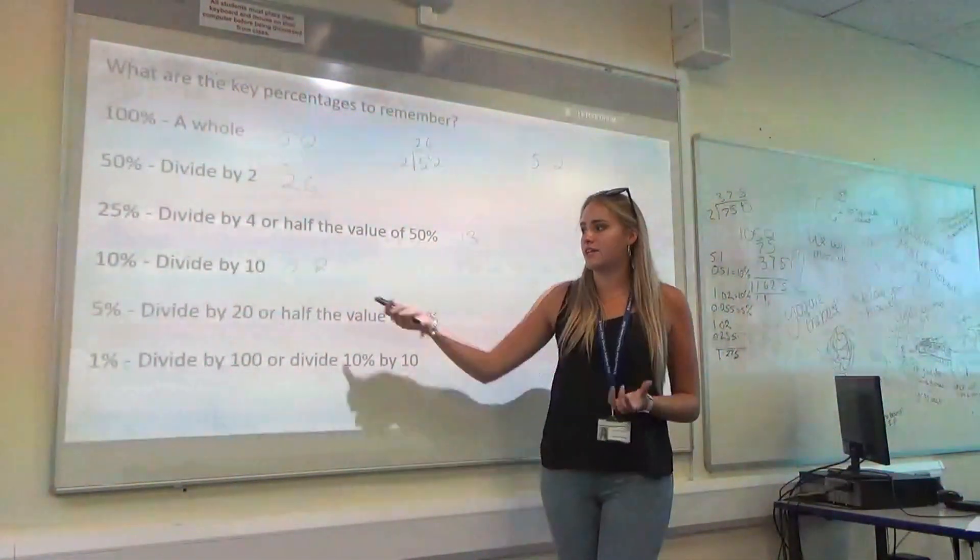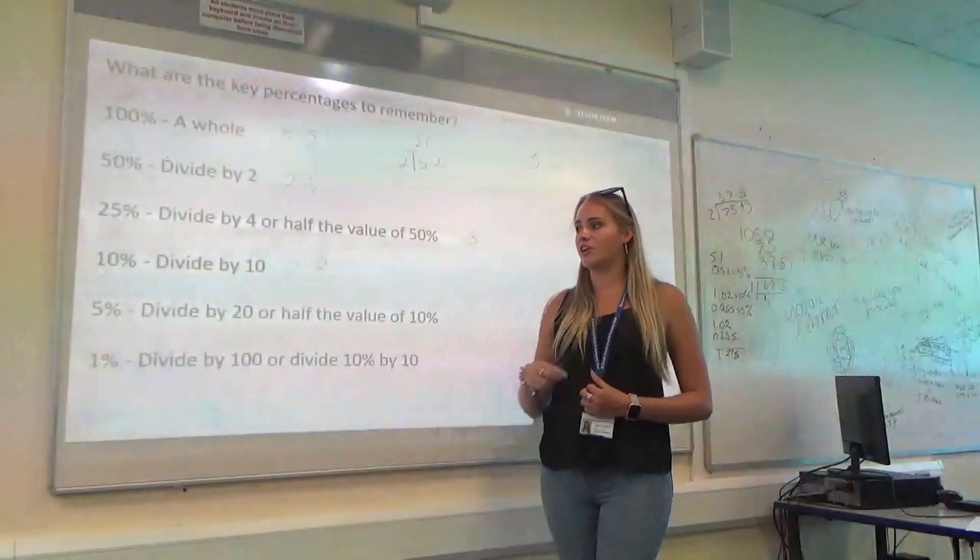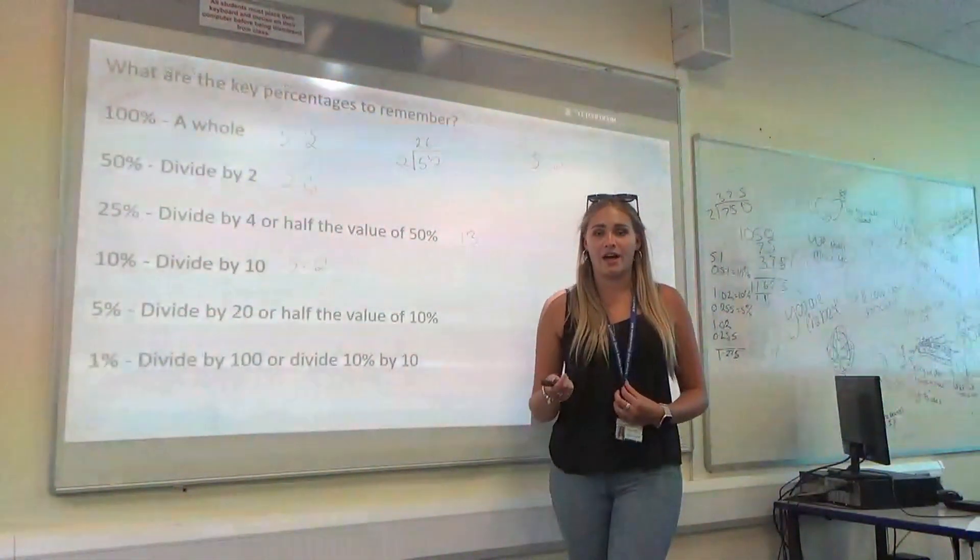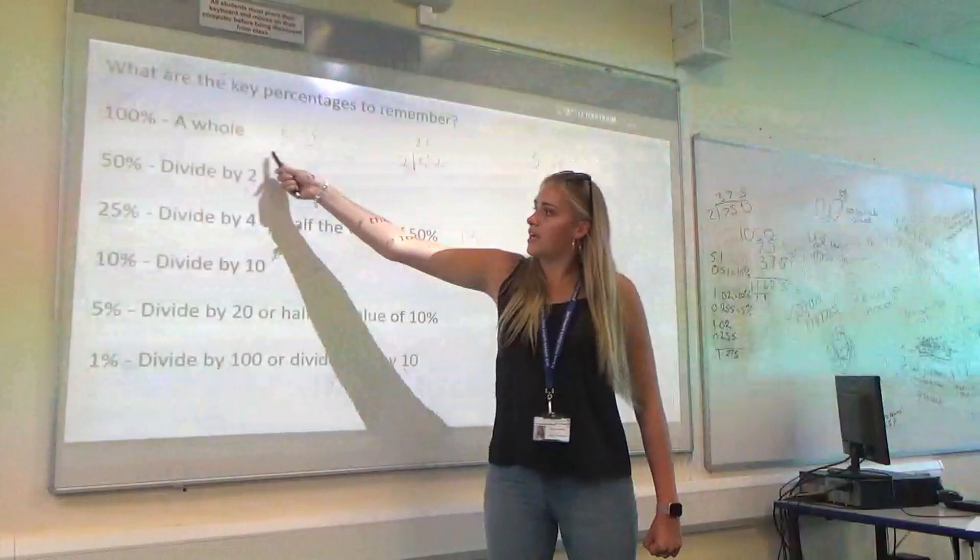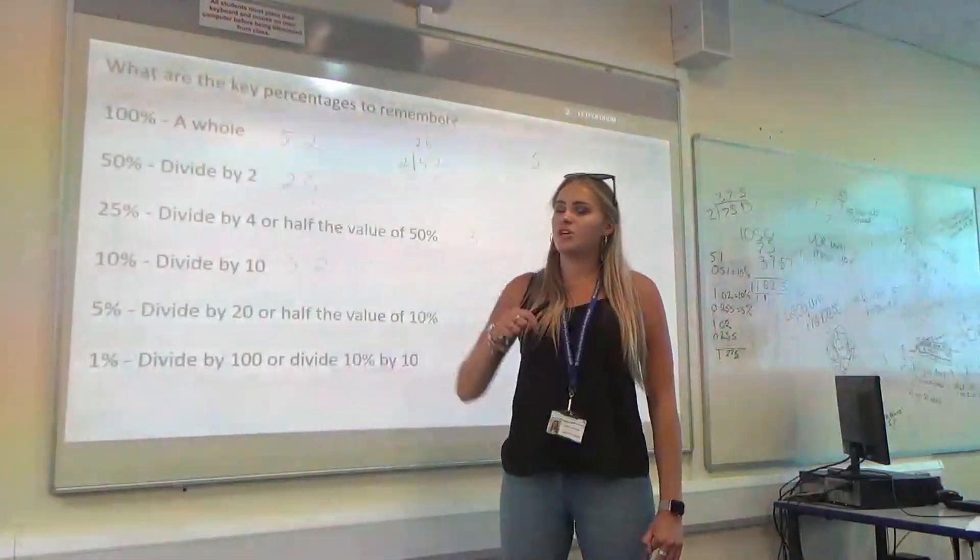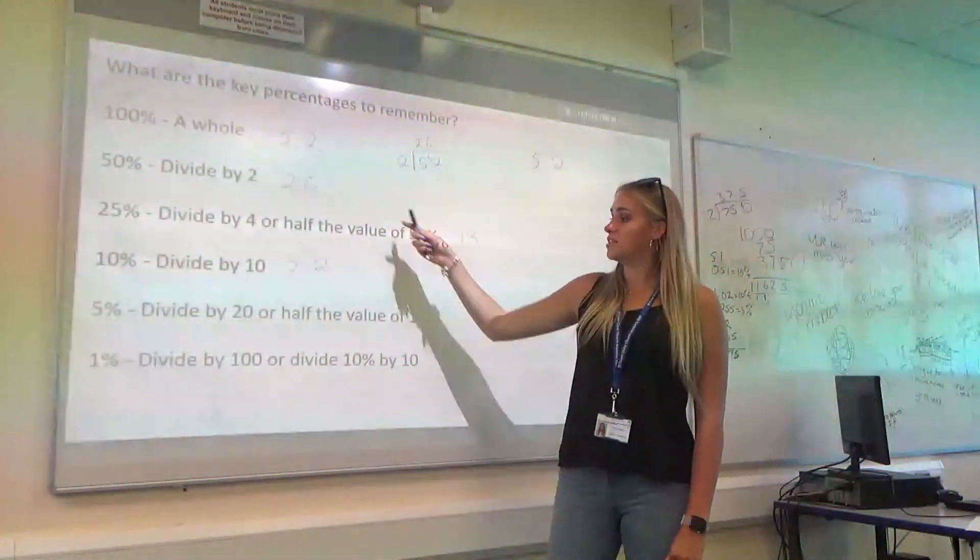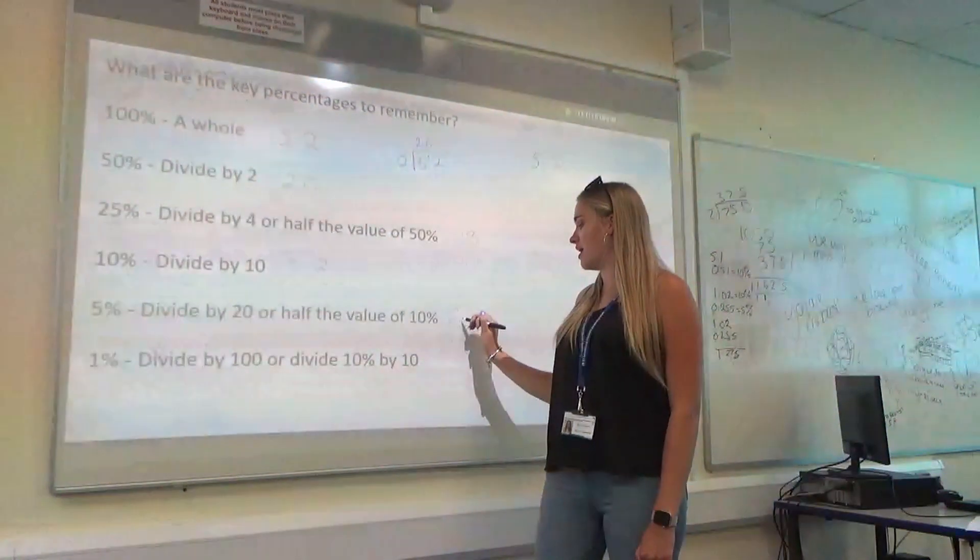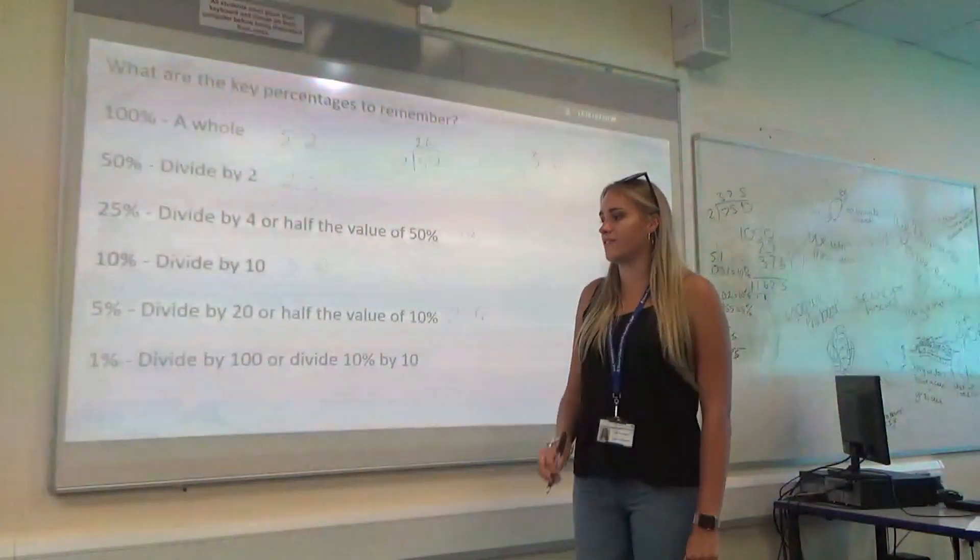5%. Now, we found our 10%. We can use that to find our 5% just by halving that. Also, here we did 50%. So, we could just divide that by 10 to find 5%. So, you're going to have your 2.6 for that one.